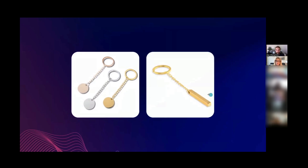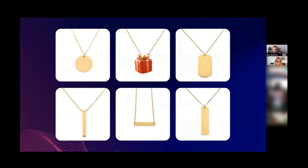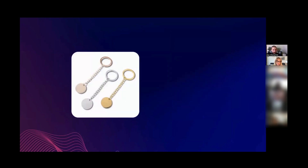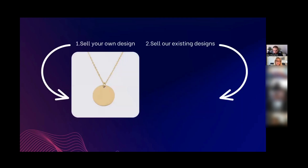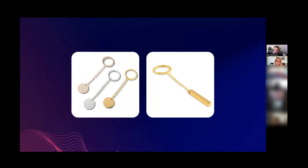Besides necklaces, we also provide print-on-demand bracelets: chain coin bracelets, bangle bracelets, and bar bracelets. These are mostly ladies' products because ladies are the big spenders on Etsy. We will work our way into adding more men's bracelets, but for now that's where our focus is. We also offer print-on-demand keychains: coin keychains and 3D bar keychains. All products — necklaces, bracelets, and keychains — come in three color variants: silver, yellow gold, and rose gold. Outprint is based out of the Netherlands.